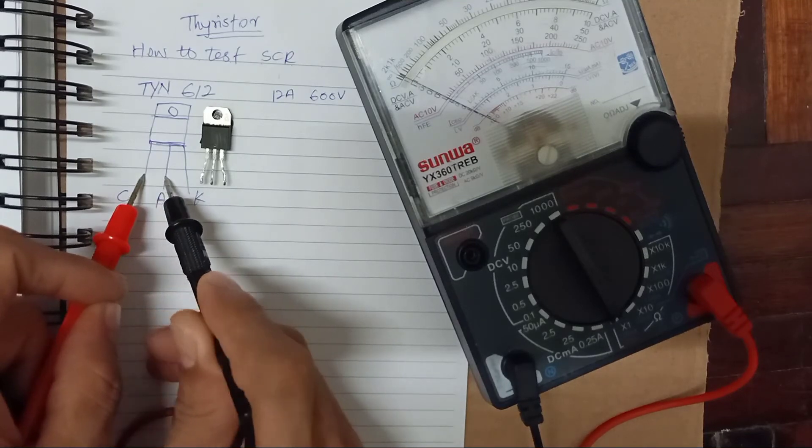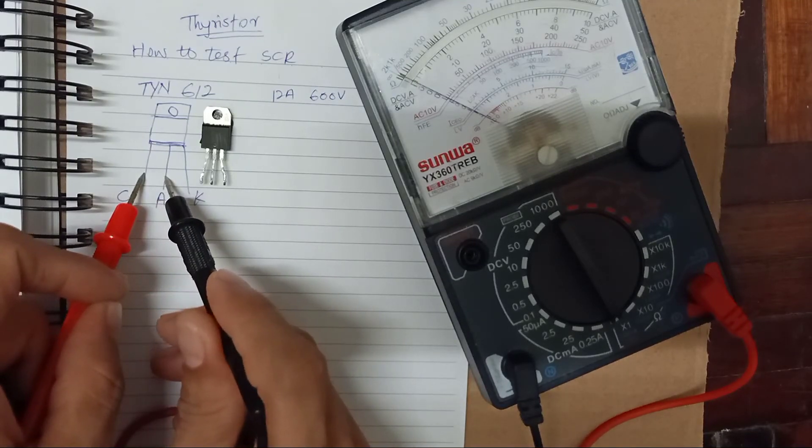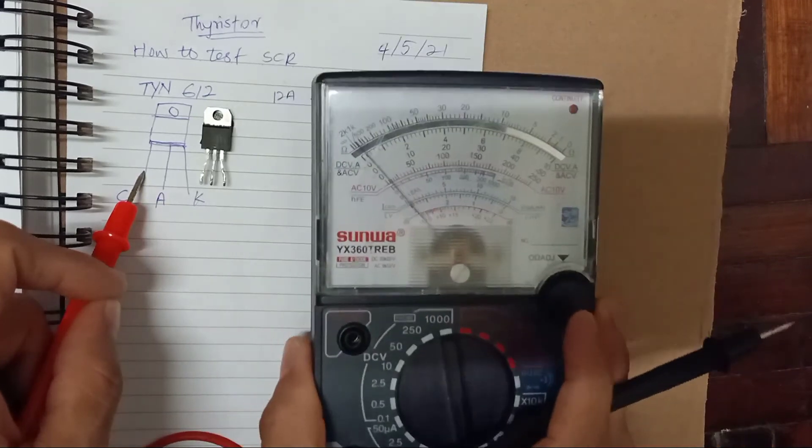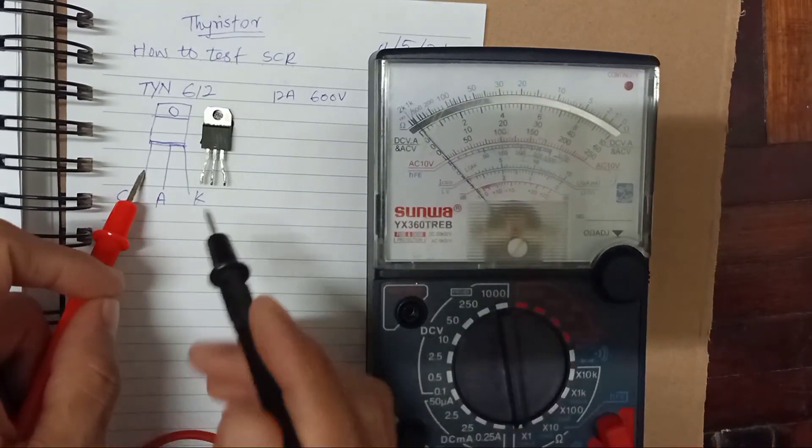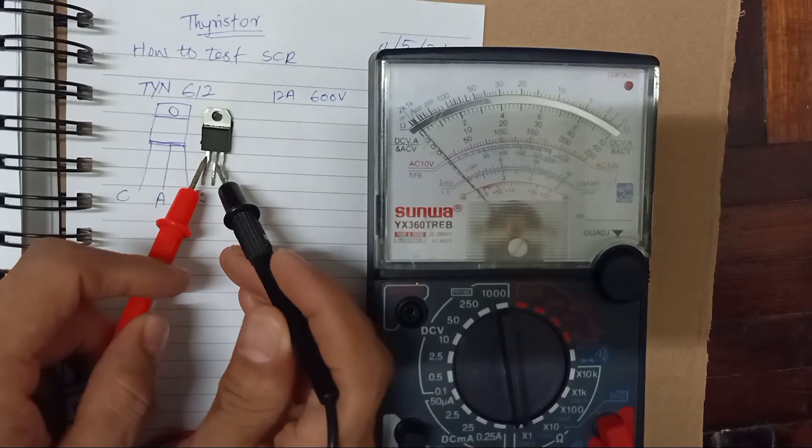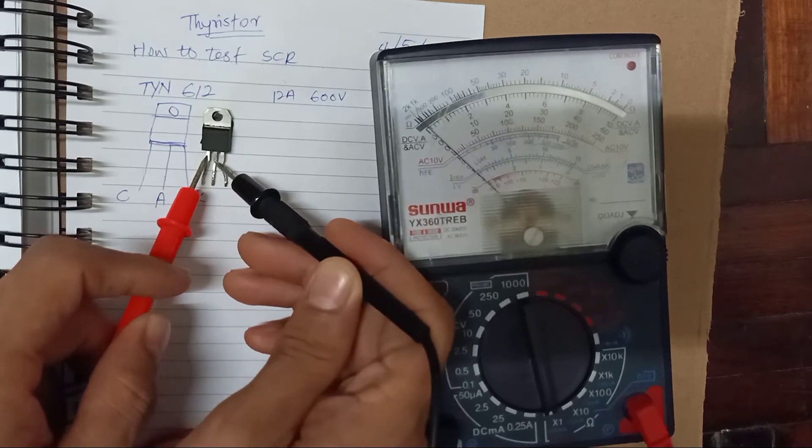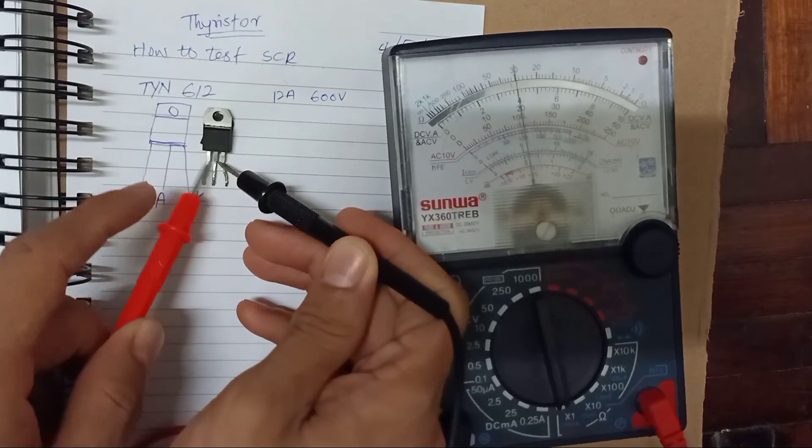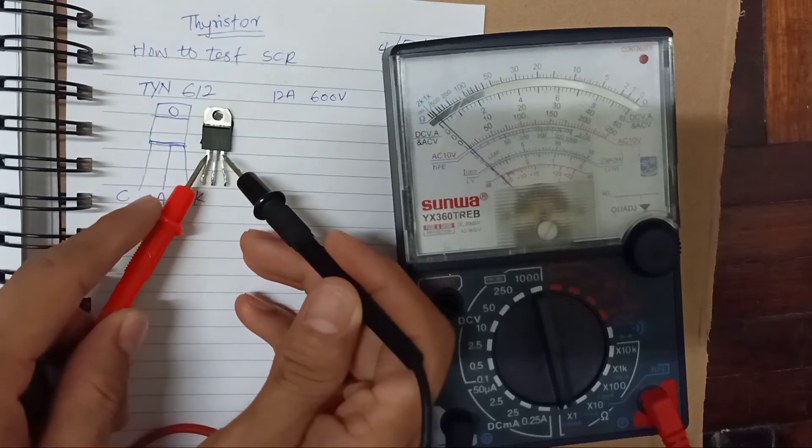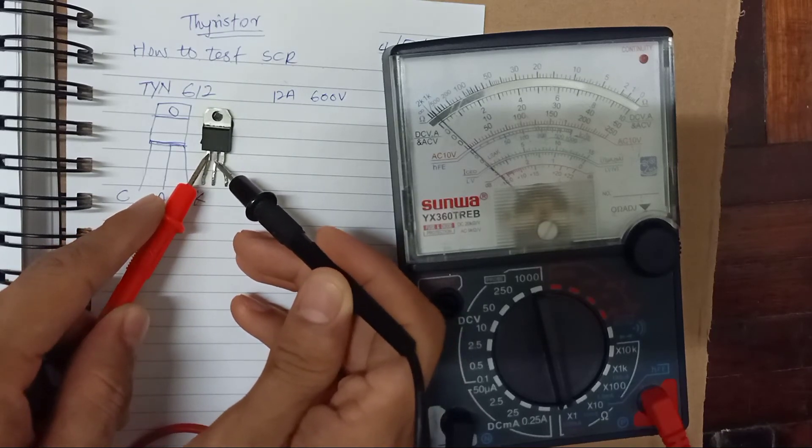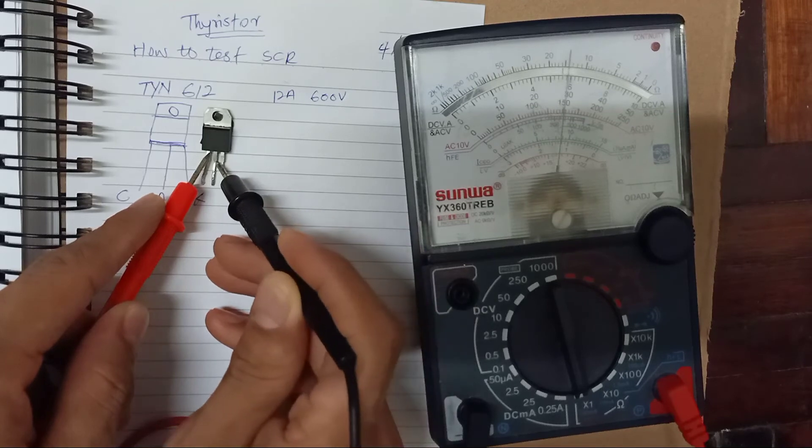And you release back so they will have hold if SCR is in good condition. Even though you short like this, then they will still be short, still on hold. Okay, we're gonna test. Gate-out here and anode-out, I make it short.